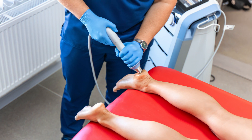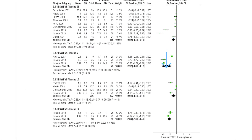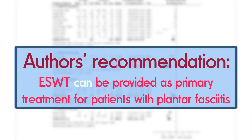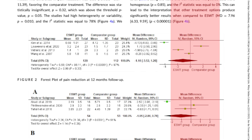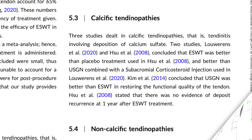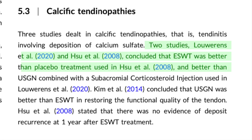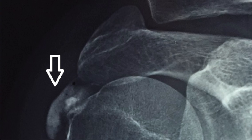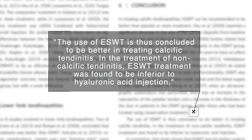There was better news for plantar fasciitis. Results showed that extracorporeal shockwave therapy had a large effect in both the short to long term, and this finding was strengthened by the fact that the data were pooled from high quality evidence. On this basis, the authors recommended that extracorporeal shockwave therapy can be provided as primary treatment for patients with plantar fasciitis. The last review found limited evidence for non-calcific tendinopathies, but showed promising results for calcific tendinopathies, where there is a buildup of calcium phosphate crystals in the tendons.